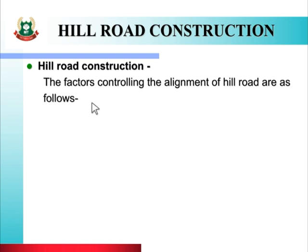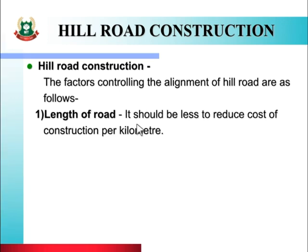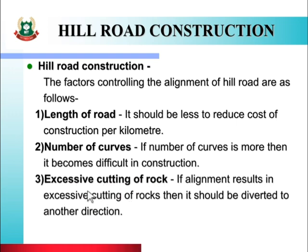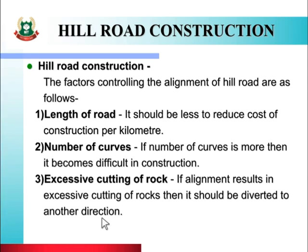The factors controlling the alignment of a hill road are as follows. First factor: length of road — it should be less to reduce the cost of construction per kilometer, meaning the length of the hill road should generally be kept short to minimize construction cost. Second factor: number of curves — if the number of curves is more, construction becomes difficult, so curves should generally be minimized. Third factor: excessive cutting of rock — if the alignment results in excessive rock cutting, it should be diverted to another direction, meaning the alignment should be chosen to minimize rock cutting work.